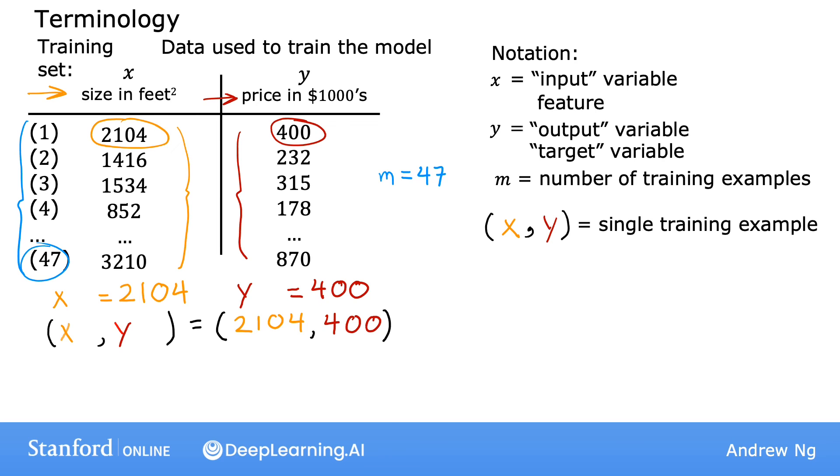So to refer to a specific training example, this will correspond to a specific row in this table on the left. I'm going to use the notation x superscript in parentheses i comma y superscript in parentheses i. This superscript tells us that this is the i-th training example, such as the first, second, or third up to the 47th training example. i here refers to a specific row in the table. So, for instance, here is the first example when i equals 1 in the training set. And so x superscript 1 is equal to 2104 and y superscript 1 is equal to 400. And let's add the superscript 1 here as well.